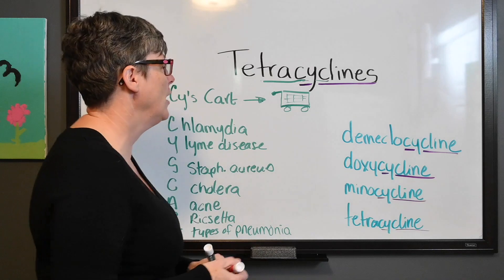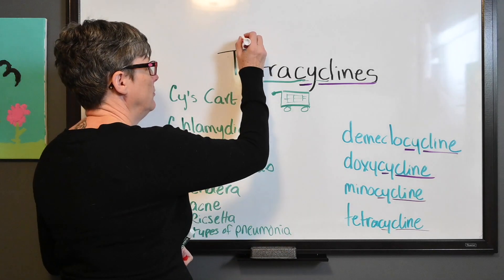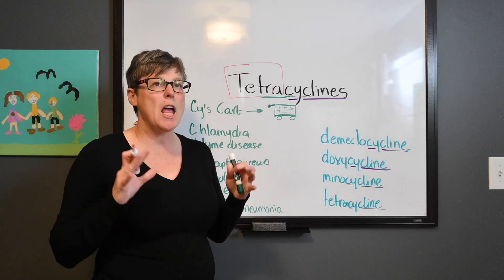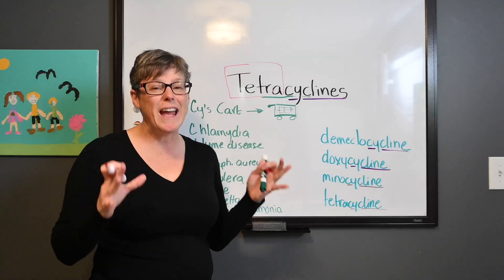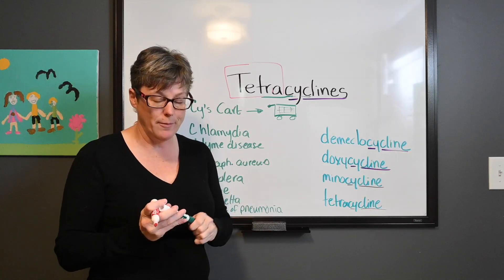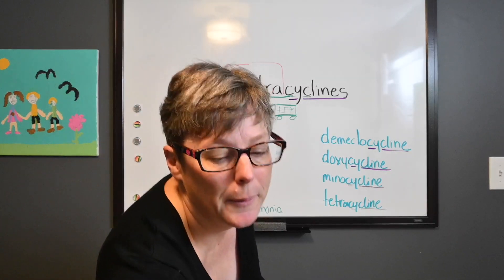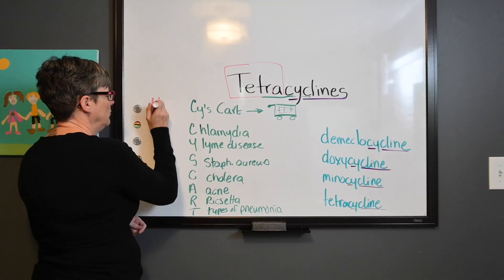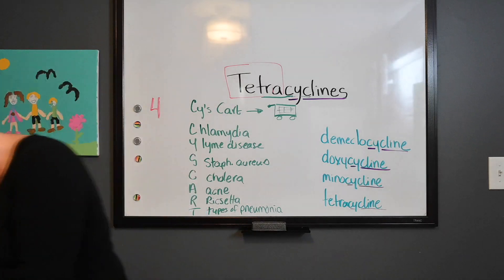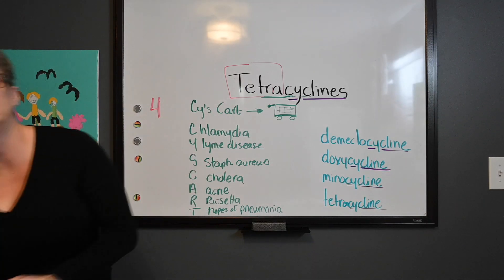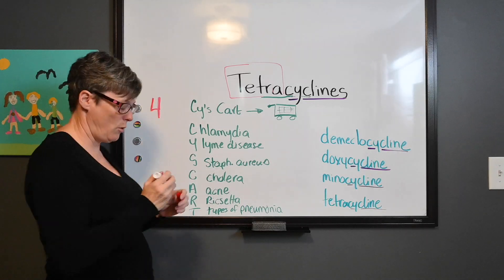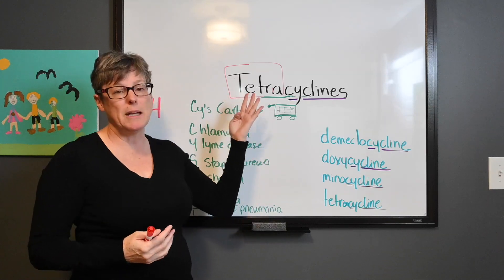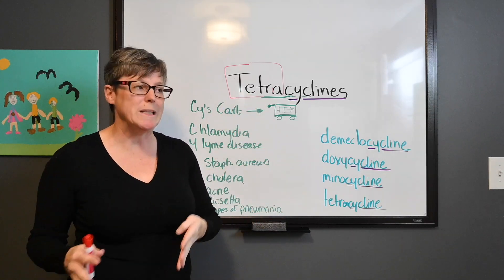Now let's look at the word 'tetra.' Tetra itself gives us a lot of information. Tetra means four. This is another fun fact: tetracycline is based off a common soil mold and it has four rings.